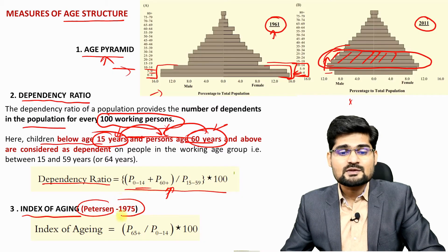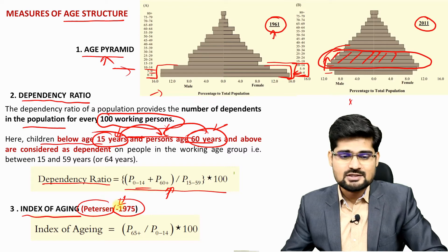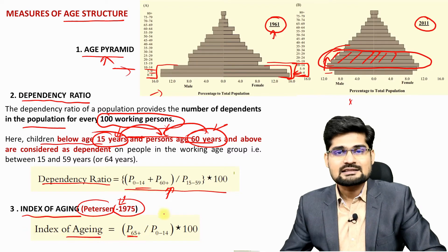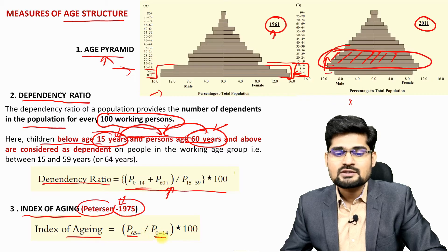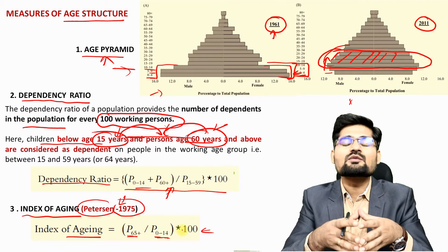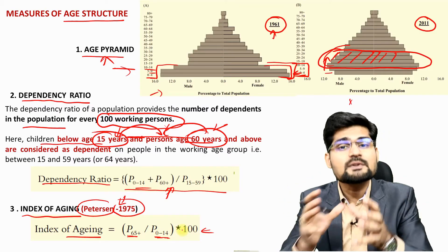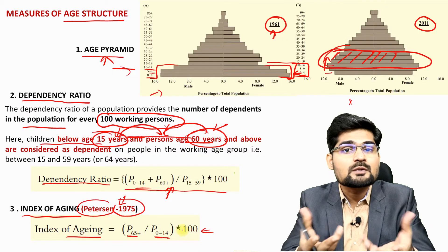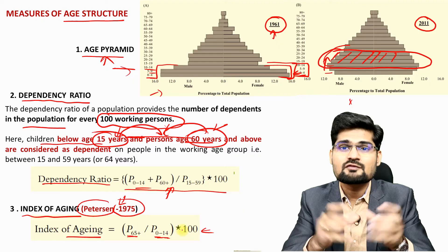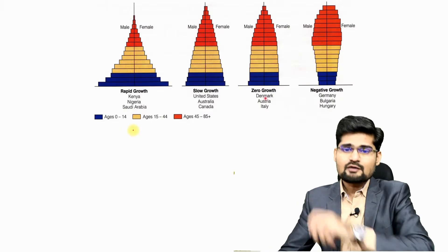Another measure is the Index of Aging, developed by Peterson in 1975. It is calculated as the population aged 65 and above divided by the population aged 0 to 14, multiplied by 100. These various measures are used depending upon the purpose and context of the study or research.